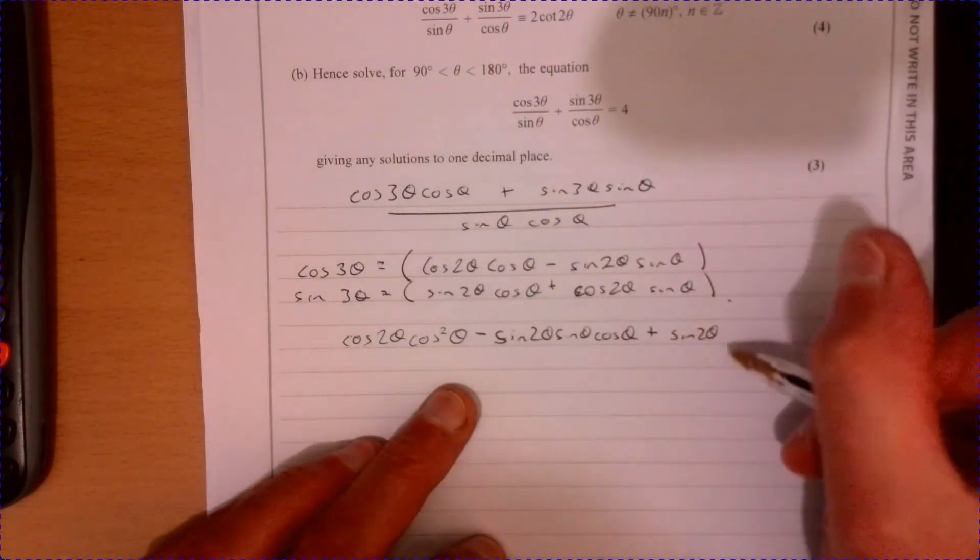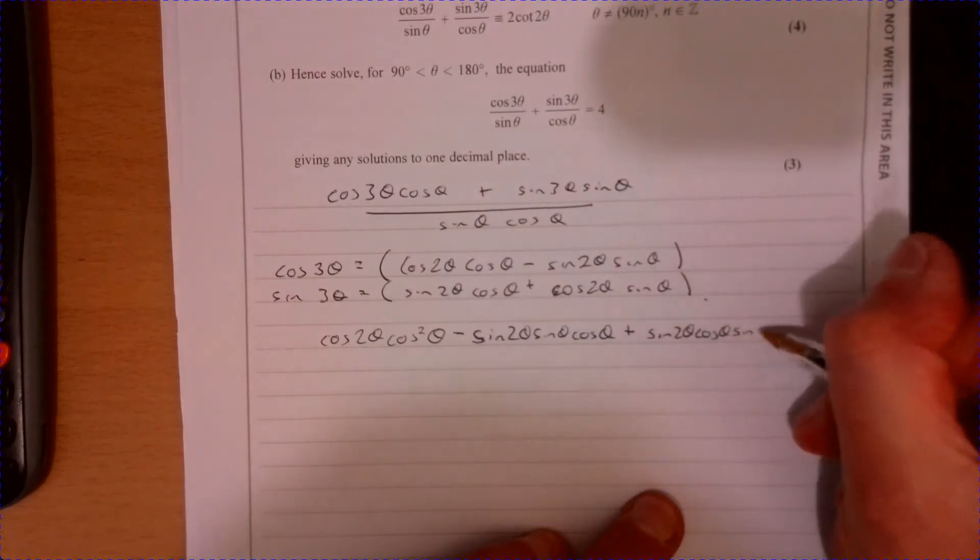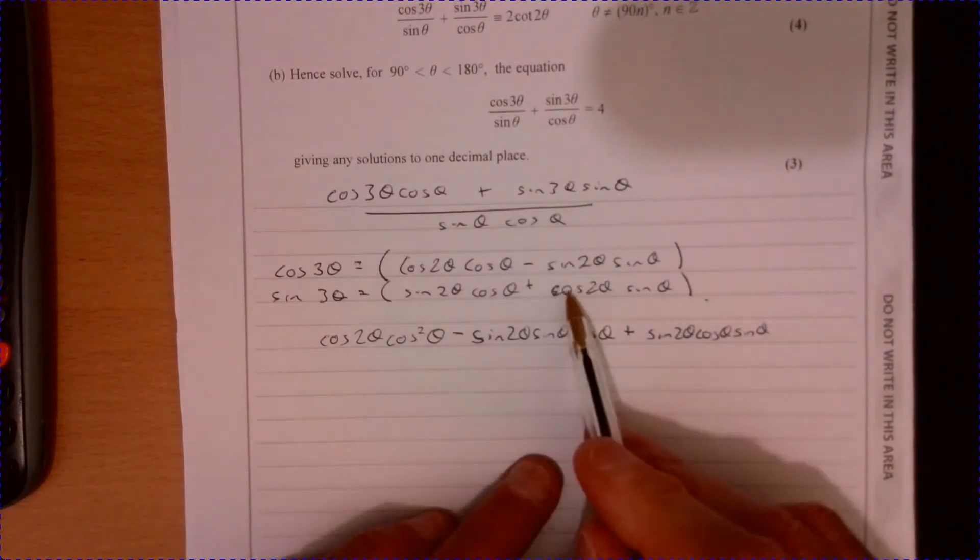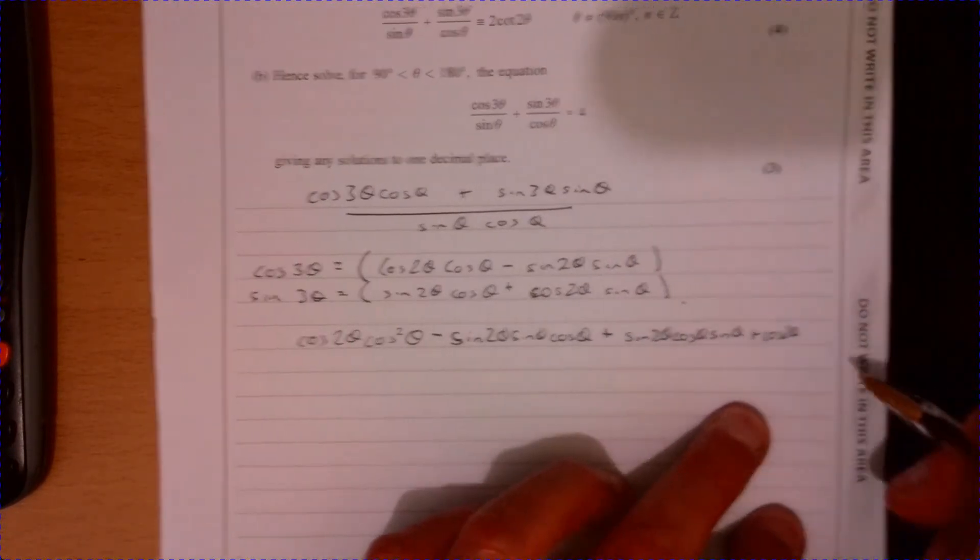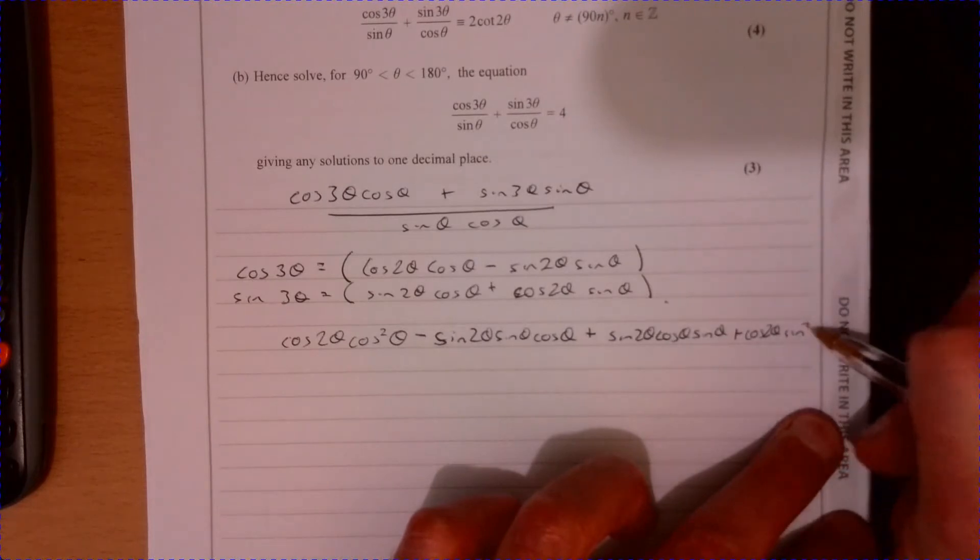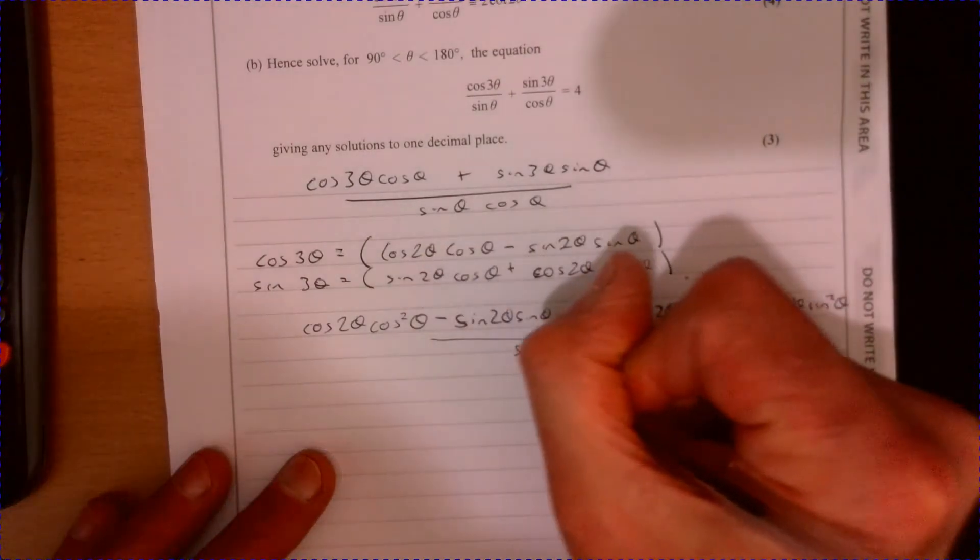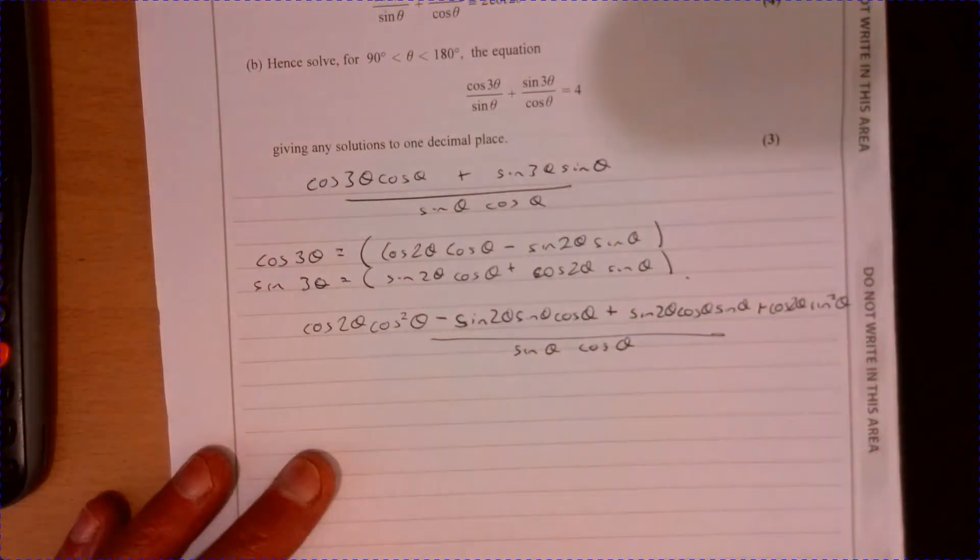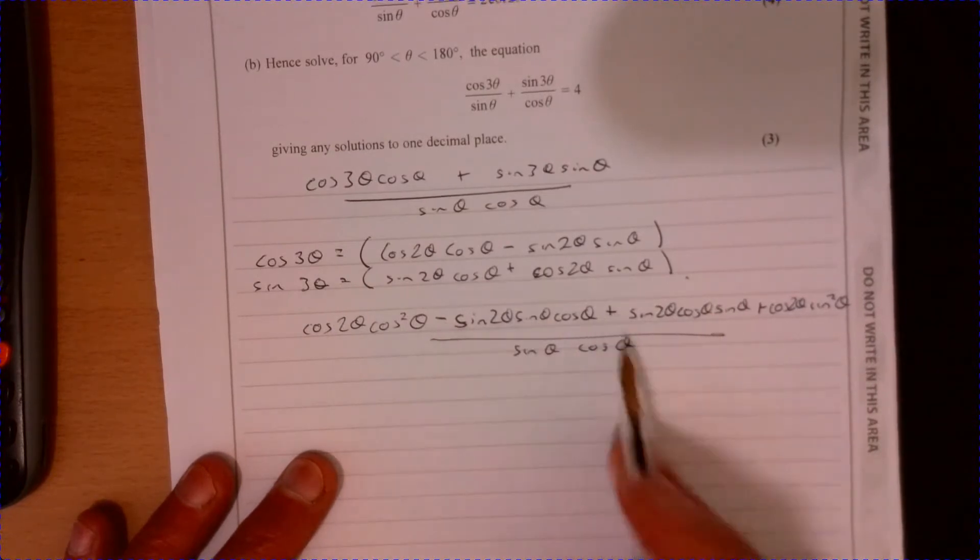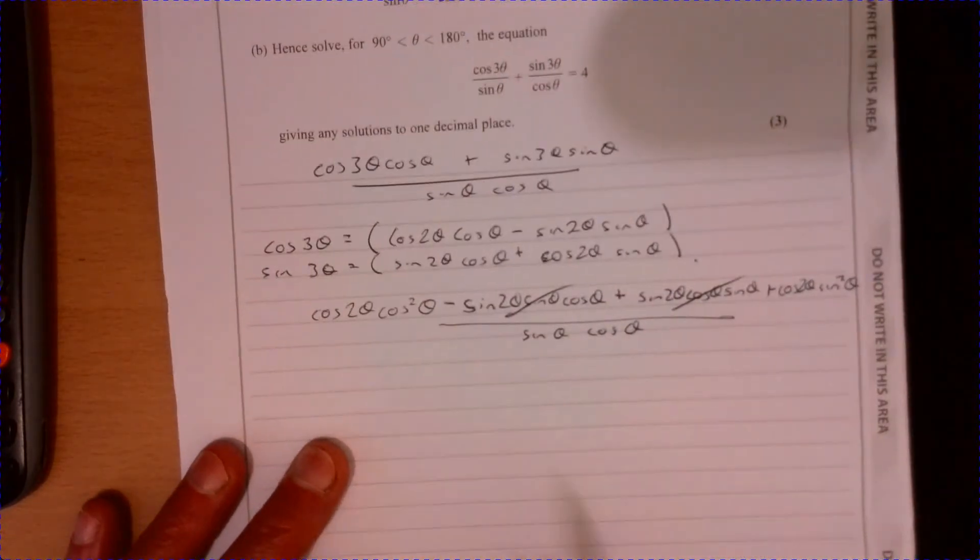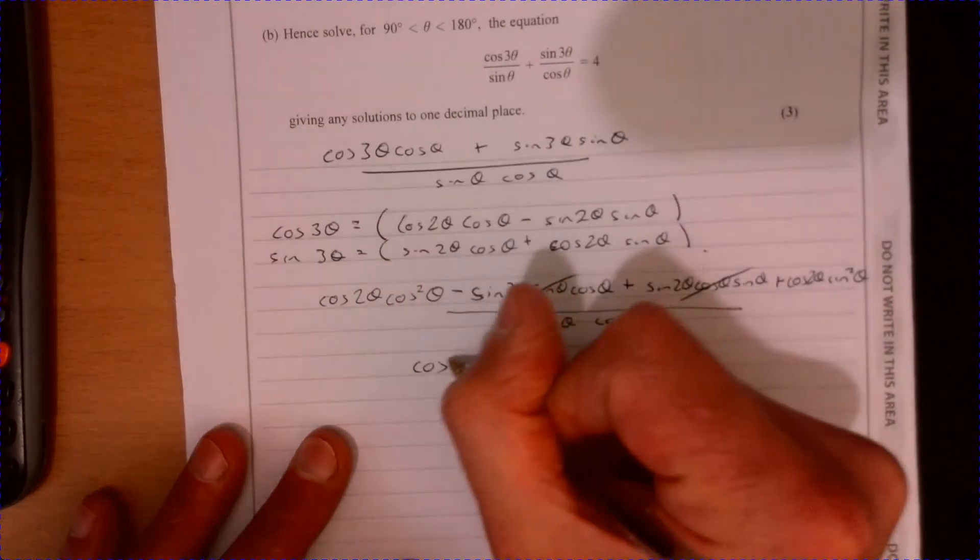Now we're over here, so this times sine θ. That's going to be plus sine 2θ cos θ times sine θ as well, so cos 2θ and sine squared θ. Then all of that lot is over sine θ cos θ. Look at these two just here: they're exactly the same, minus plus, they just cancel out.